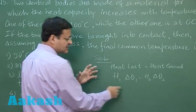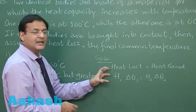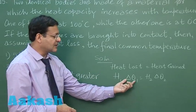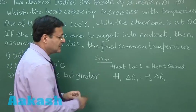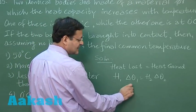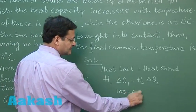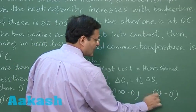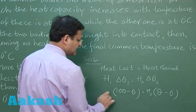So let us suppose this is the body at higher temperature, so this heat capacity is more, so this temperature loss will be less. So it will be 100 minus something, some theta, and this is theta minus 0 degree. And this is h2 and this is h1.